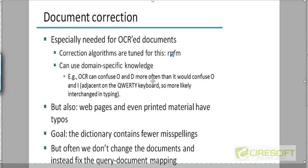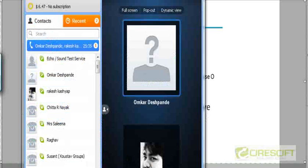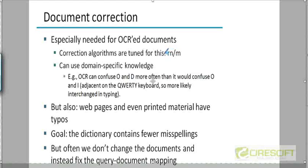In the process of converting scanned documents into text, correction algorithms may be needed. For example, if the letters R and N appear right next to one another in a scanned document, converting it into text may introduce a spelling error where R and N get replaced with M, because from a distance in a scanned document it may look like the letter M. Similarly, O and D may get confused with each other in optical character recognition, whereas O would not get confused with I. Domain-specific knowledge about which letters are likely to get confused with which others can help hone your spell corrector.